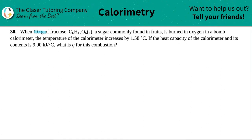Number 30. When 1.0 grams of fructose, which is C6H12O6, a sugar commonly found in fruits, is burned in oxygen in a bomb calorimeter, the temperature of the calorimeter increases by 1.58 degrees Celsius. If the heat capacity of the calorimeter and its contents are 9.90 kilojoules per degree Celsius, what is the q for this combustion?